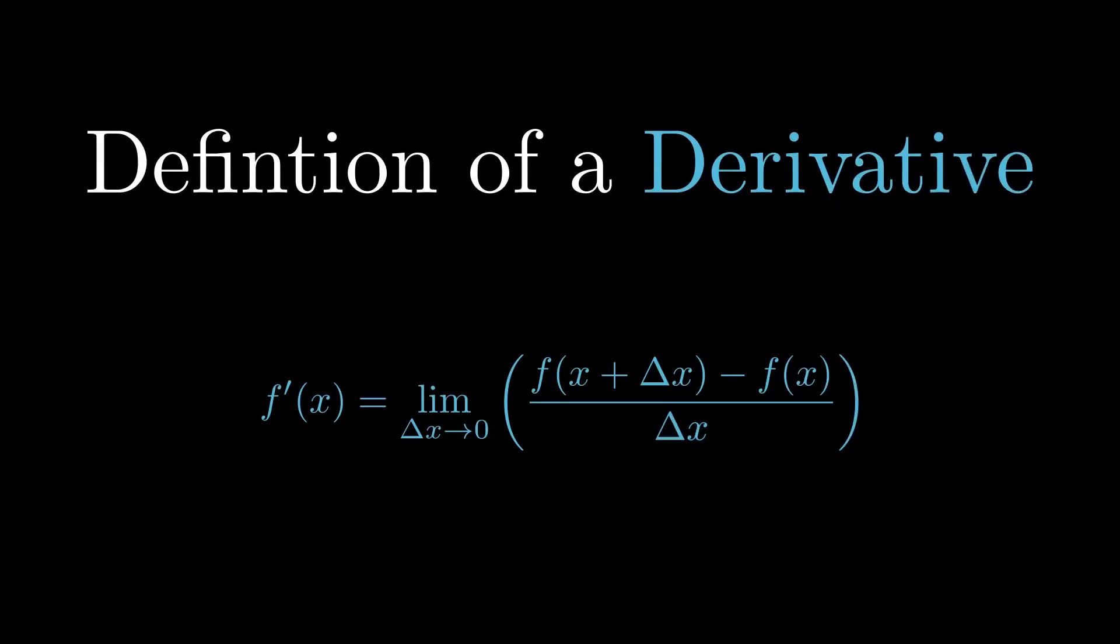That's actually exactly what the definition of a derivative is. More generally, the delta x is written as h, and sometimes the derivative function f prime of x is written as dy over dx. When you plug in any x into the derivative function, it tells you the slope of the original function at that x.